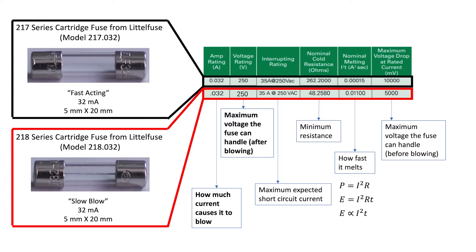The key difference between these two fuses here is in the nominal melting I squared T. You'll notice that with the fast acting fuse, it was 0.00015, but with the slow blow fuse, it was 0.01, a much larger number. It means that it takes the slow blow fuse a longer period of time to melt when you have the same amount of current going through it as the fast acting fuse.